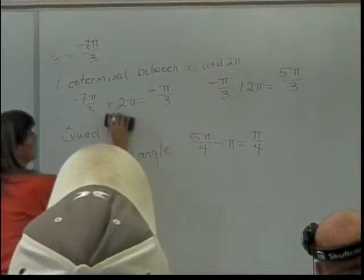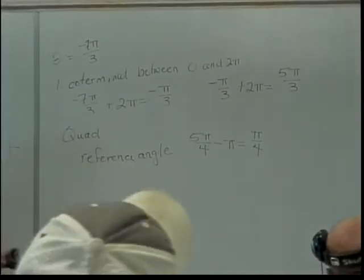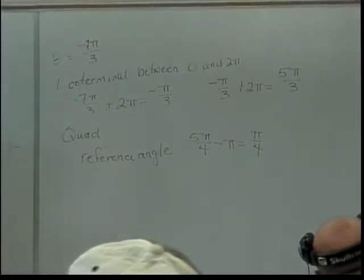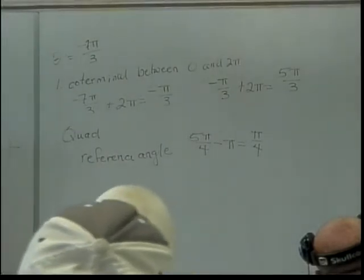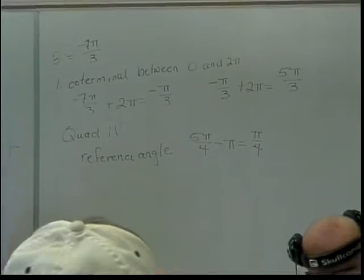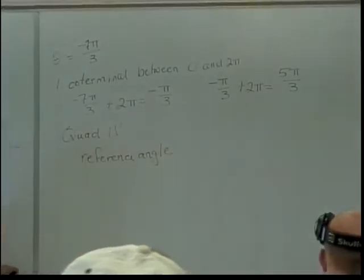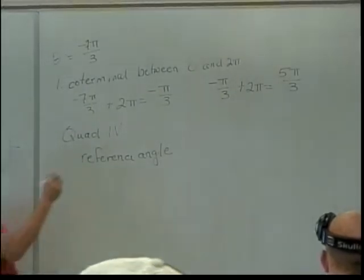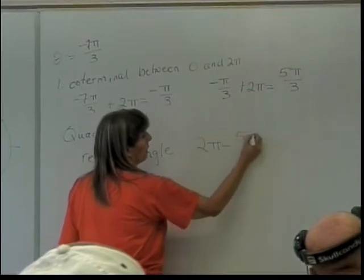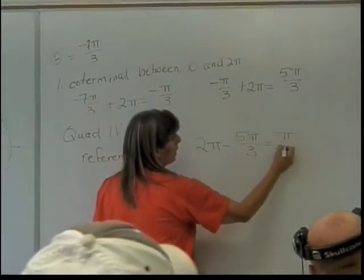Okay, now the next question is, since it's between 0 and 2 pi, what quadrant is 5 pi over 3 in? How about 4? Yeah. It's in quadrant 4. In quadrant 4, how do I find my reference angle? 2 pi minus the angle. So this will be 2 pi minus 5 pi over 3, which will give me a reference angle of pi over 3.